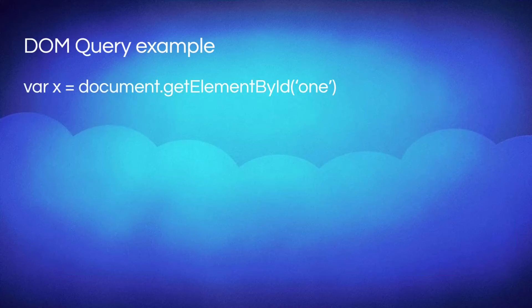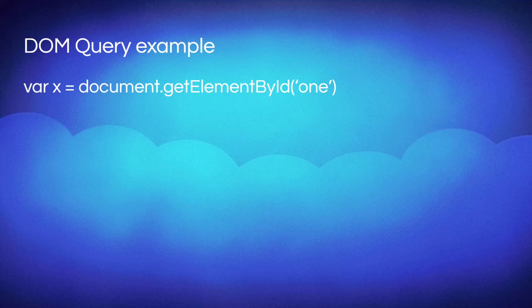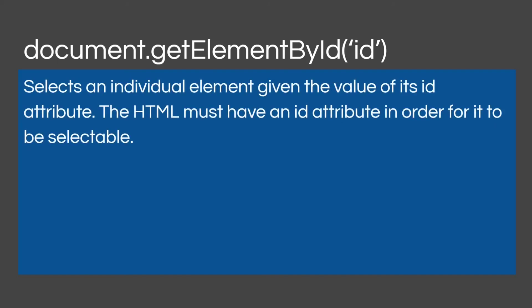Here's an example: `var x = document.getElementById('one')`. We're getting an element by its ID, and the ID is called 'one'. If you forgot what the difference between classes and IDs are, go back to the CSS lesson. We can assign IDs to HTML elements and call them — so we can select individual elements given the value of their ID attribute. You have to have an ID attribute in order for it to be selectable.